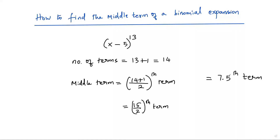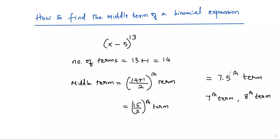Here we may have a question — it's not an integer, it's a decimal. How can I take the 7.5th term? Either I can take the 7th term or the 8th term. Whenever we get a decimal like 7.5, it is always the exact middle value of two consecutive numbers. In this case, 7.5 is the exact middle of the 7th and 8th values, so we will have two middle terms: the 7th term and the 8th term.